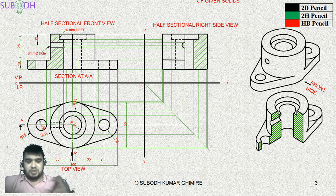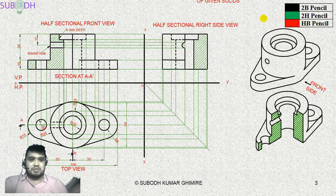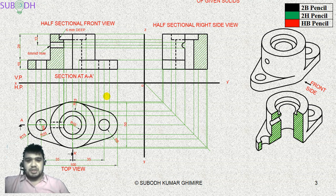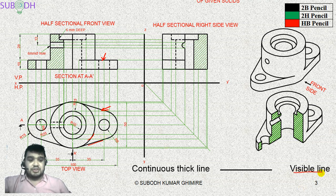Now today we are not learning to draw that object, but rather we want to understand the variety of lines used in engineering drawing. You can see different lines — like different pencil notations and line types. The first type is the continuous thick line, which represents the visible outline of the object in a drawing. This is used for the visible line.